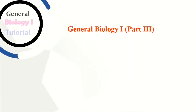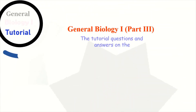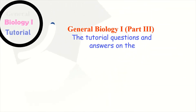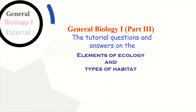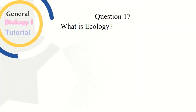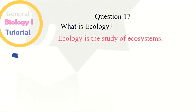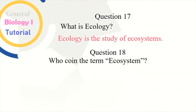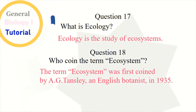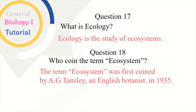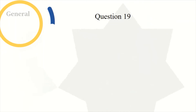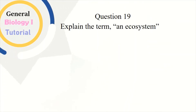General Biology 1, Part 3: tutorial questions and answers on the elements of ecology and types of habitat. Question 17: What is ecology? Ecology is the study of ecosystems. Question 18: Who coined the term ecosystem? The term ecosystem was first coined by A.G. Tansley, an English botanist, in 1935.